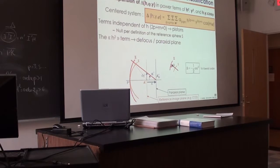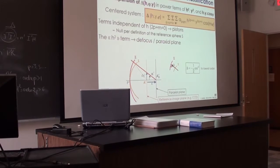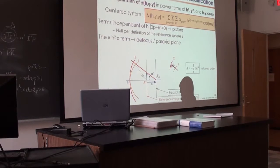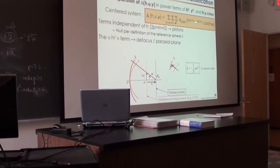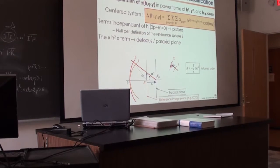Let us now put names on each of these terms. To lowest order, consider the terms independent of H — terms such that 2E + N = 0. These terms do not depend on H, so they do not depend on the radius of the pupil. The height of your object being fixed, it's basically a constant. Since P and M are both zero, these terms are constants. They are called pistons — basically constants — and by definition they are null, because they depend only on your reference sphere.